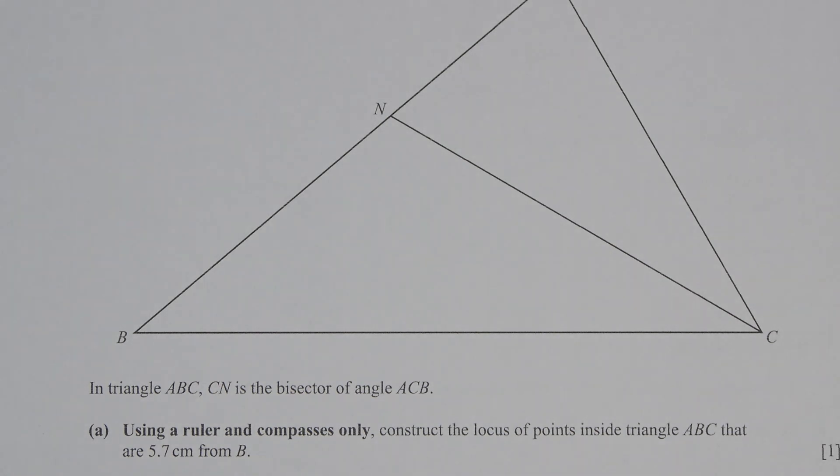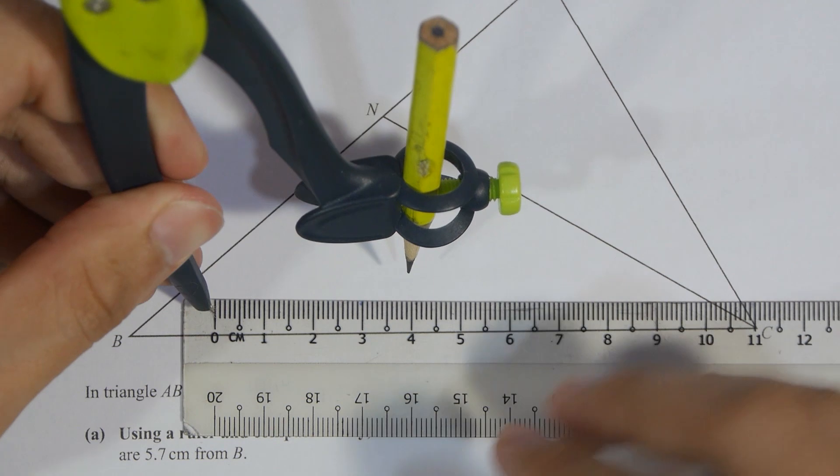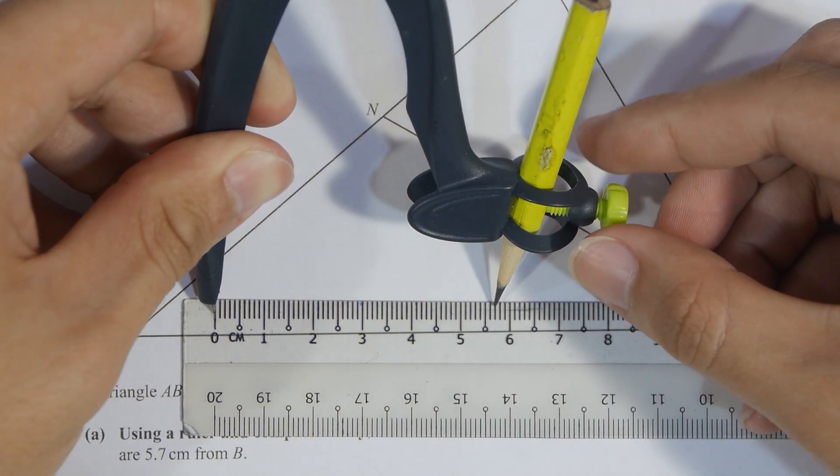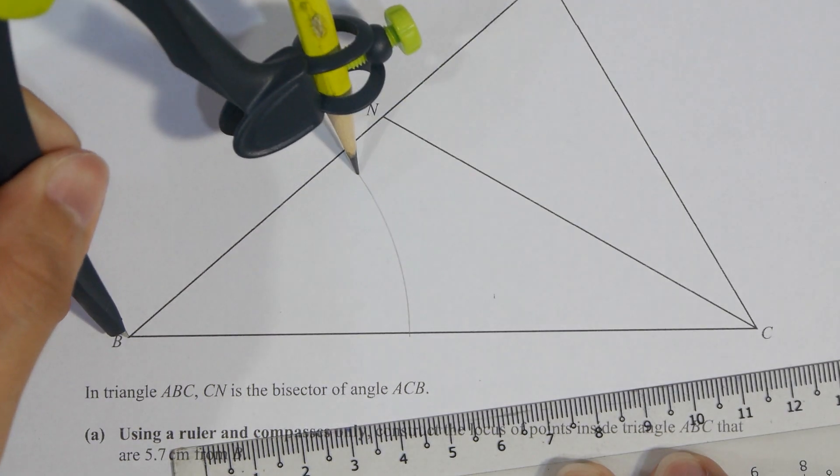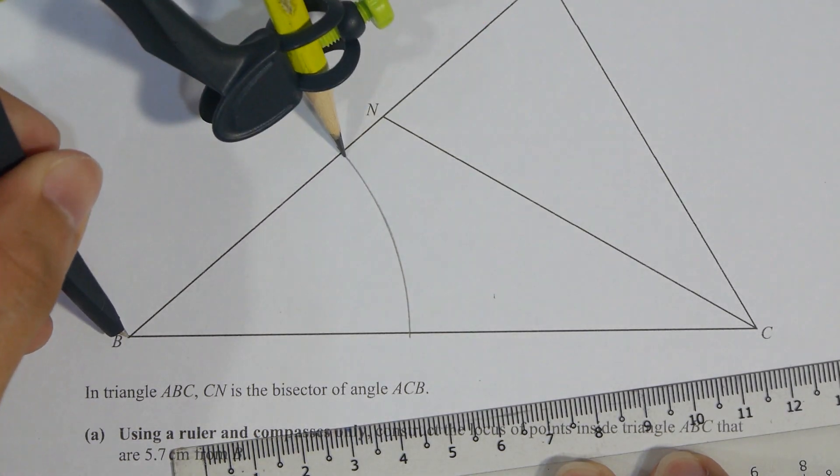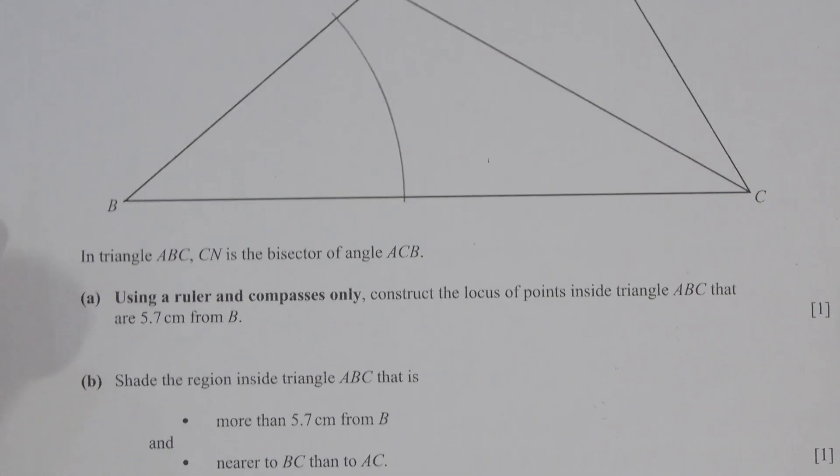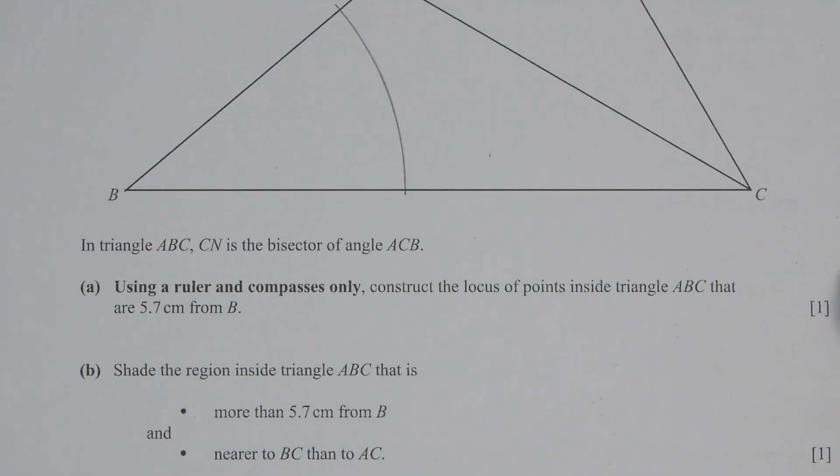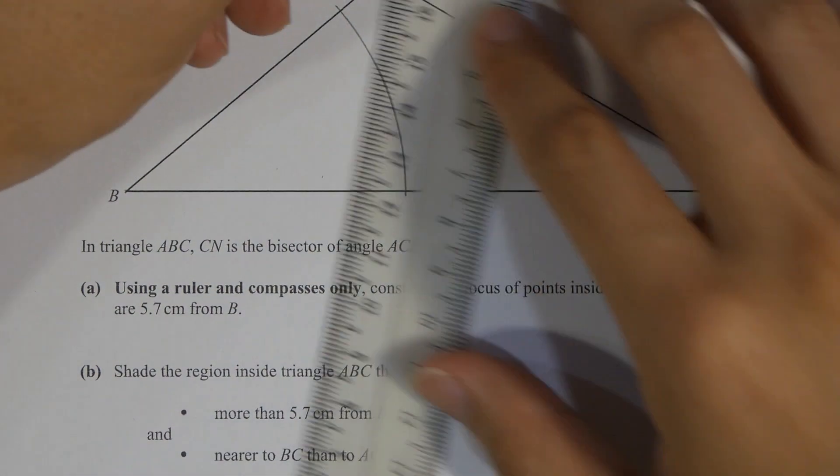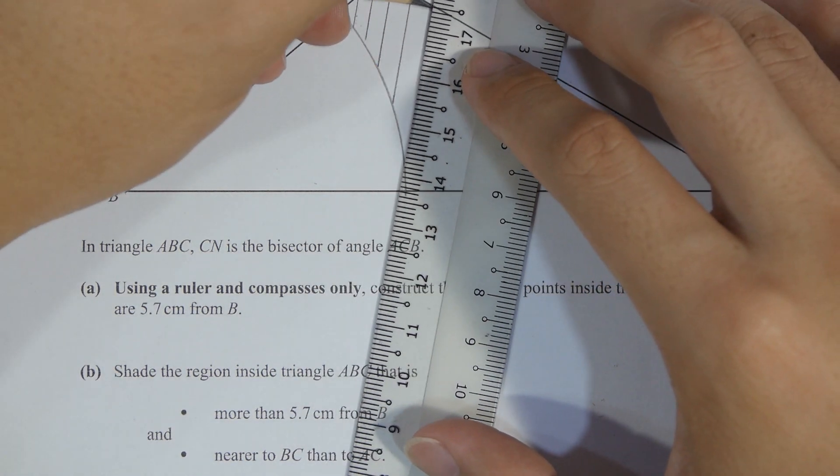Question six. First I drew the arc, which is more than 5.7 CM from B. After I construct the curve, then you check the region they wanted you to shade, which is nearer to BC than to AC. This is where the shaded region locates at.